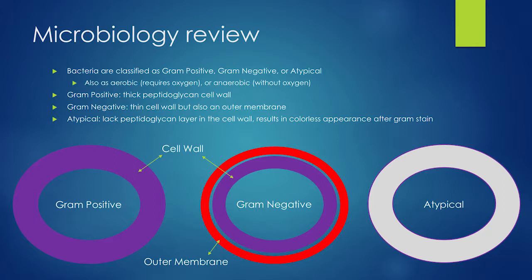Some different types of bacteria: we have gram positive, gram negative, and atypical. Gram positive bacteria show up blue or purple on a gram stain because they have a thick peptidoglycan layer in their cell wall. Gram negatives show up red because during the staining process you apply a red safranin dye at the end.